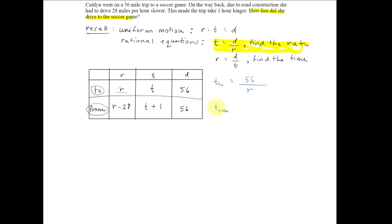t, meaning the time from the soccer game, was given as t plus 1 equals the rate, 56, over the rate, r minus 28.